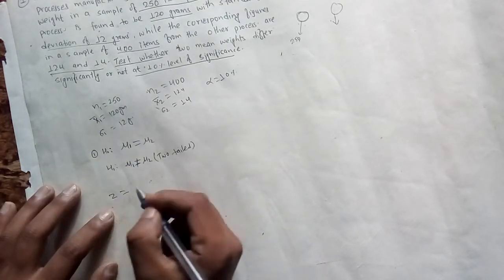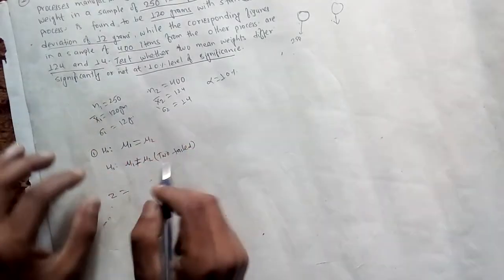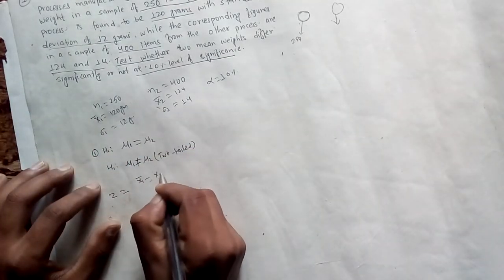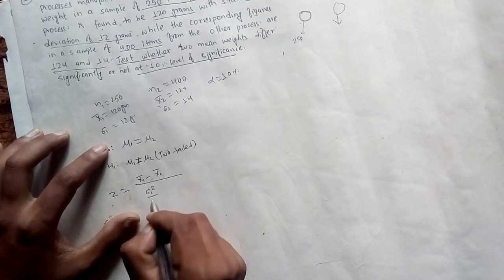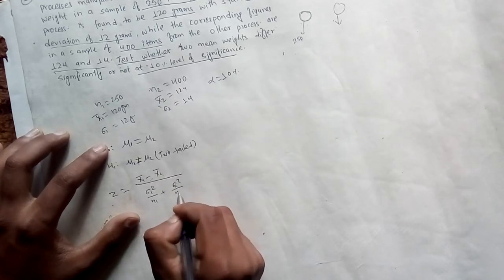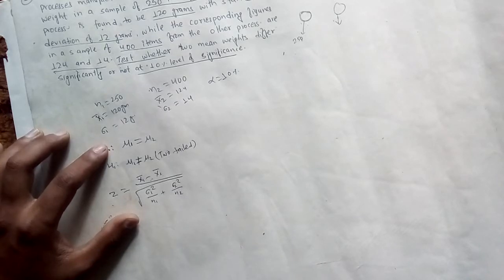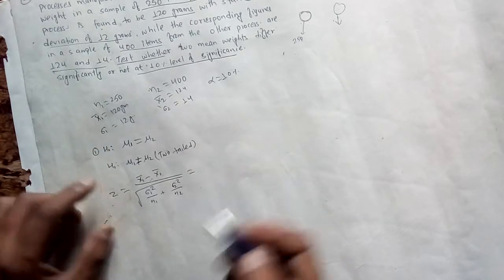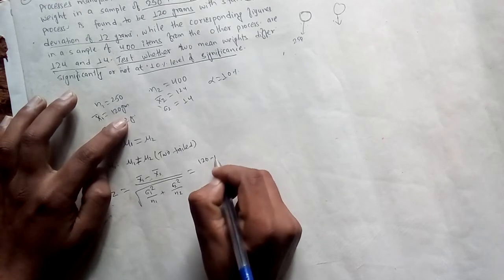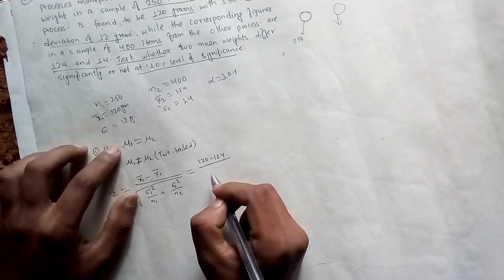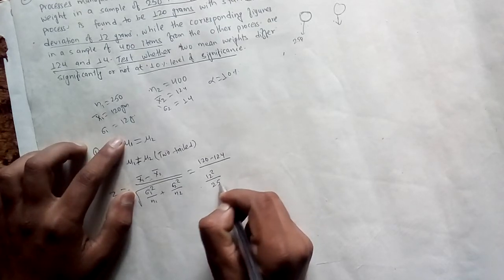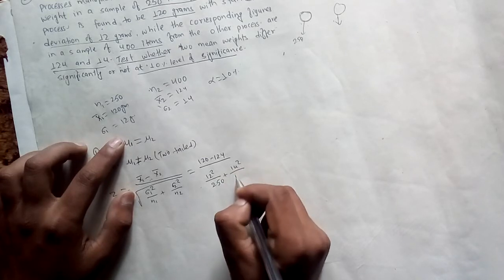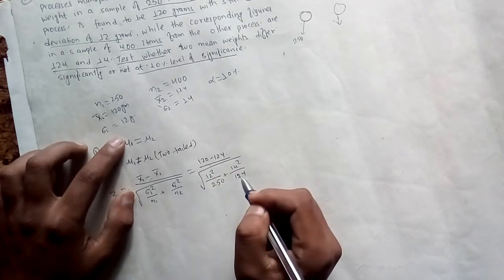Z calculated equals the difference of means — x̄1 bar minus x̄2 bar — divided by the square root of sigma 1 squared by n1 plus sigma 2 squared by n2. Substituting: 120 minus 124, divided by the square root of 12 squared by 250 plus 14 squared by 400.